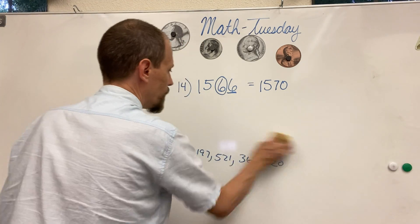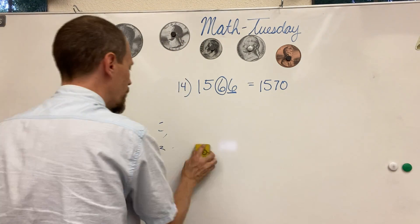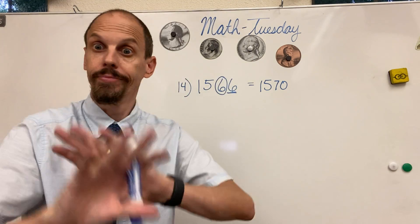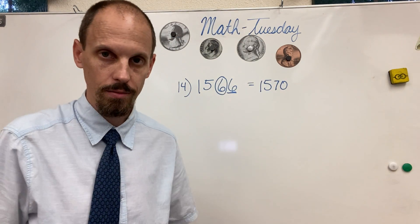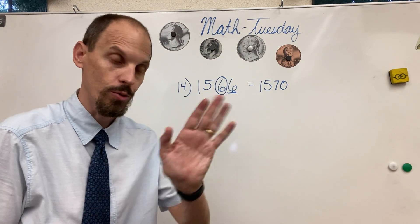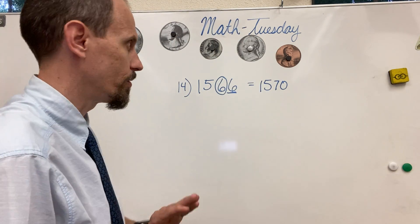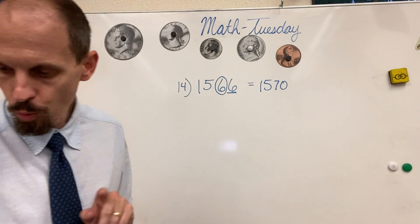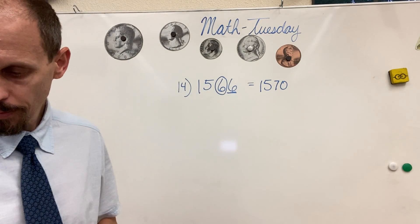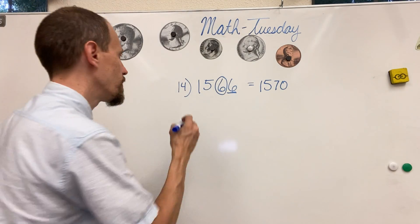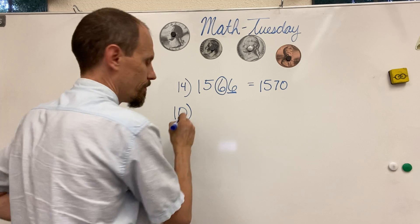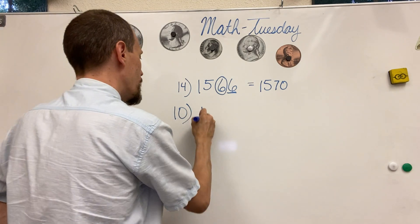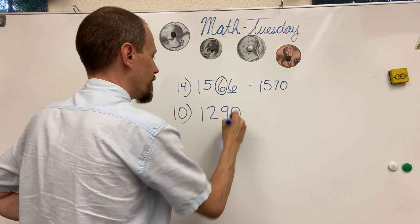Just worry about figuring out how to round to the nearest tens, because once you understand that, everything is easy — especially when you get to the hundreds, which we'll do next week. That'll be super easy. So the first thing you do — let's do one more together. Let's do number 10: 1,290.